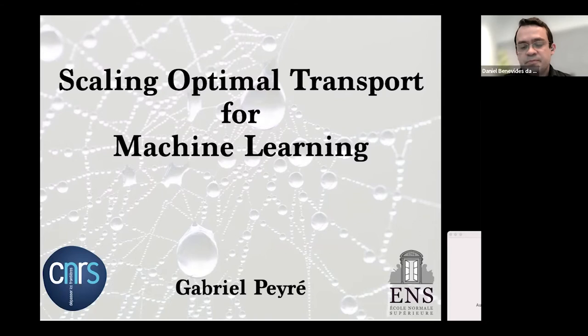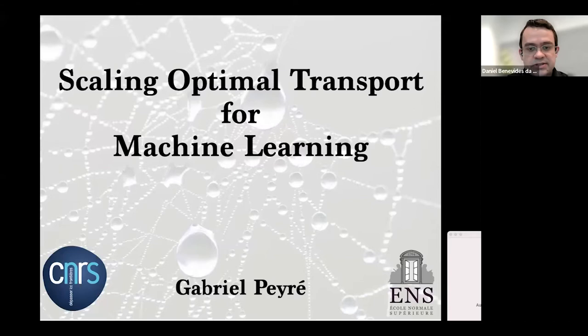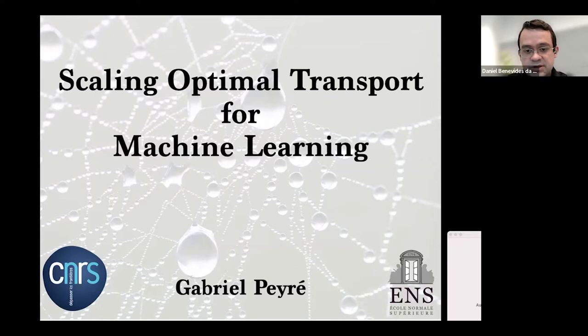Before we move to the talk, let me introduce Dr. Gabriel Peyré. He is currently a senior researcher at CNRS in France, and also a professor at the École Normale Supérieure in Paris. He works at the interface between Applied Mathematics, Image, and Machine Learning. He obtained two ERC grants, one in 2010 and a Consolidator grant in 2017, the Blaise Pascal Prize from the French Academy of Science in 2017, and the Magens Prize from the Italian Mathematical Union in 2019.